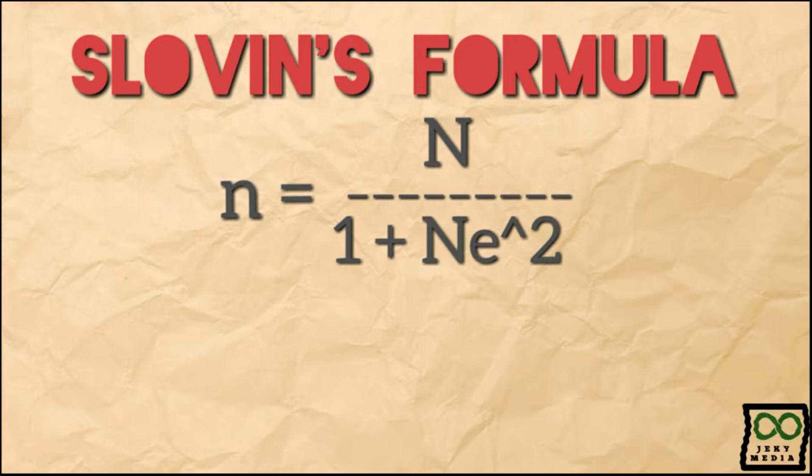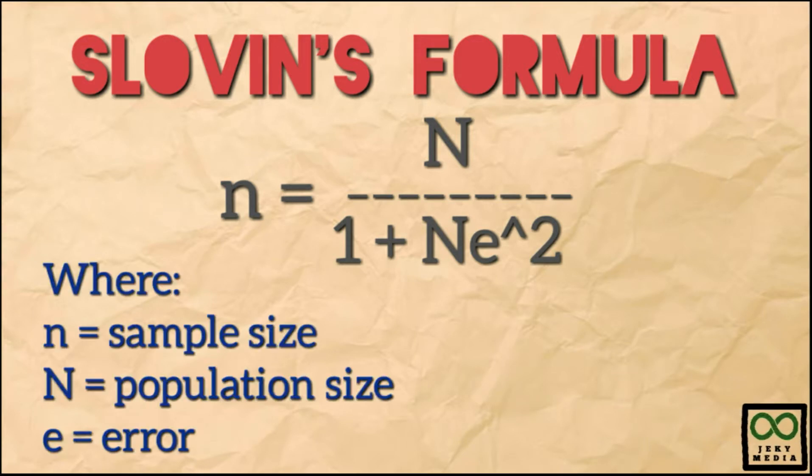Here is the Slovin's formula: lowercase n is equal to uppercase N over the quantity of 1 plus uppercase N times e squared. Where lowercase n is your sample size, uppercase N is your population size, and e is your margin of error.